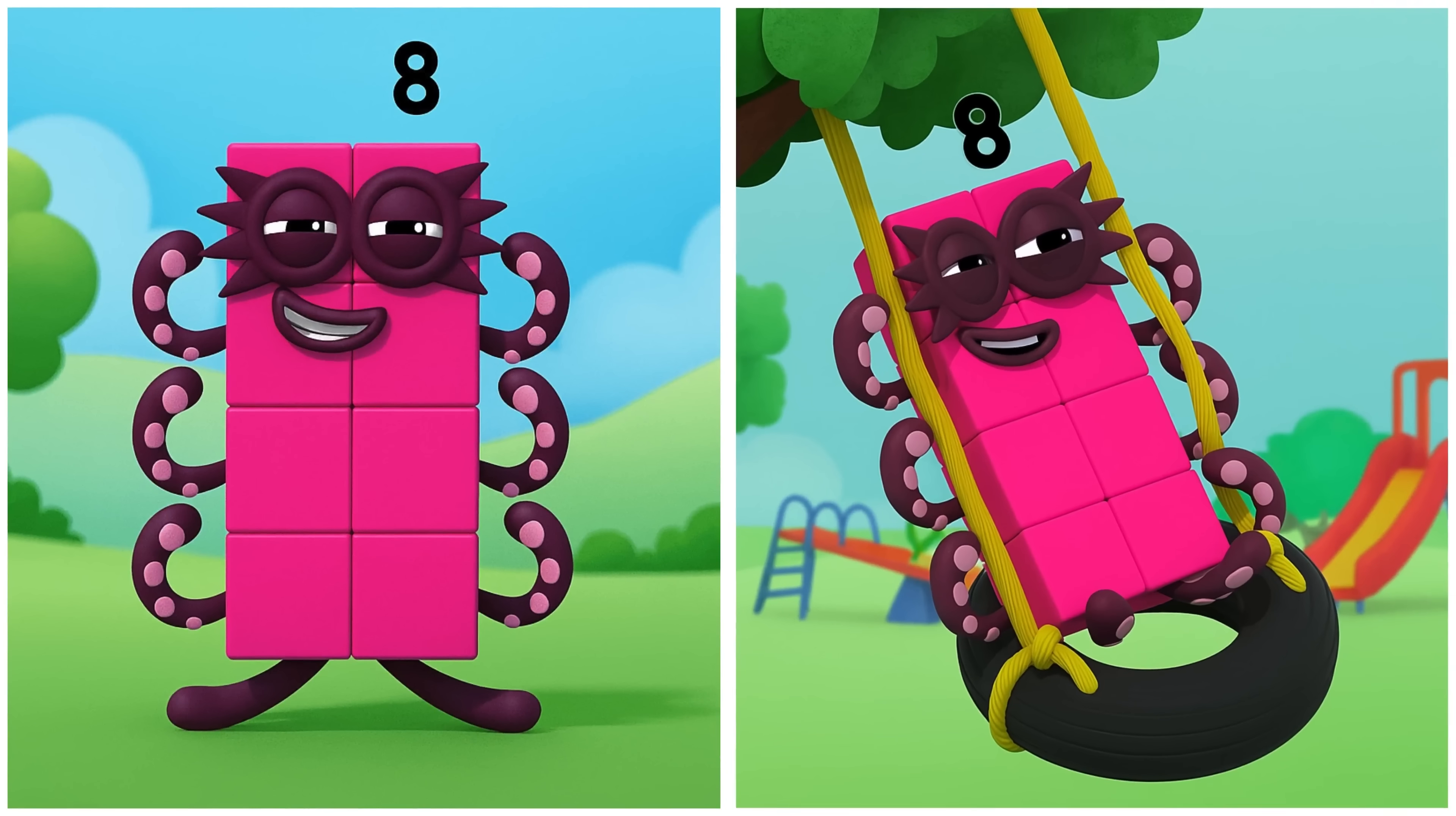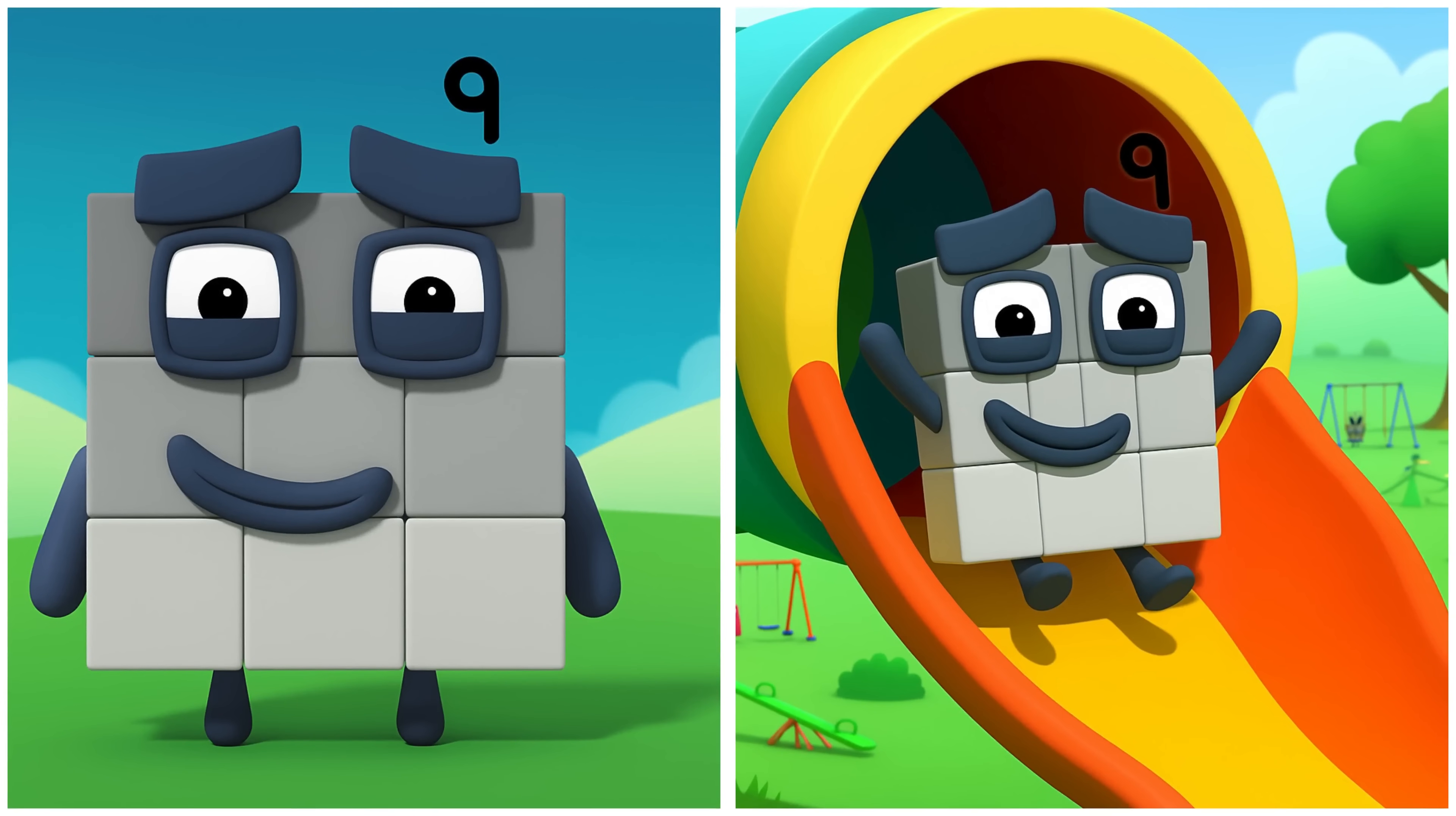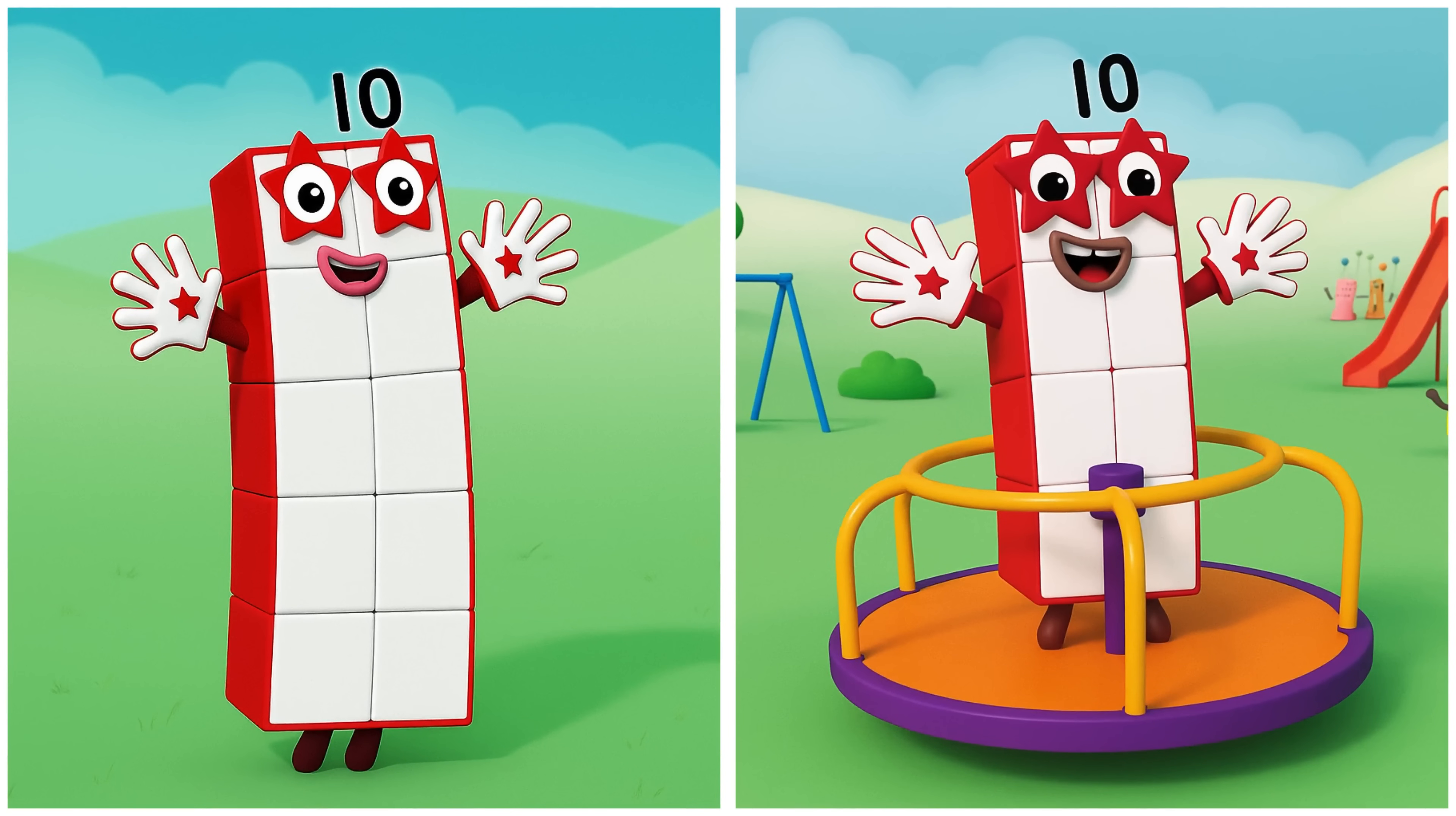Eight. Eight swings on the tire swing. Thank goodness you're here! I'm rushed off my tentacles! Nine. Nine plays on the tunnel slide. We've got a hanky, a bit of a tickly nose. Ten. Ten spins the big spinning wheel.